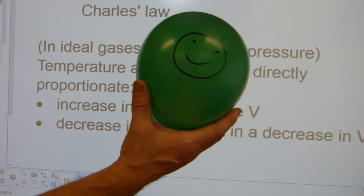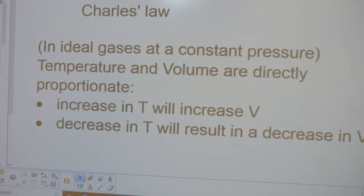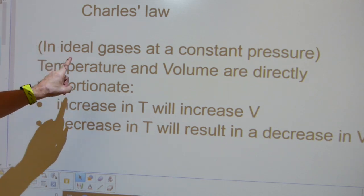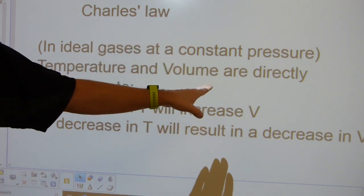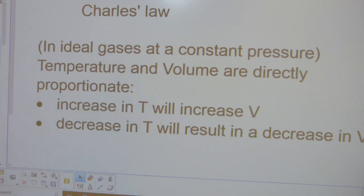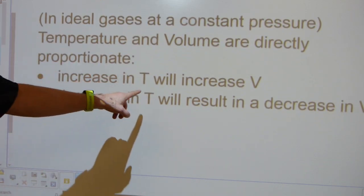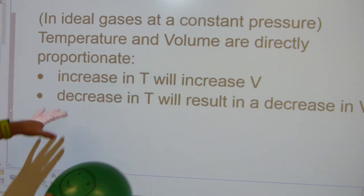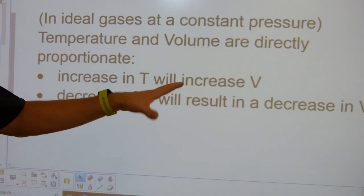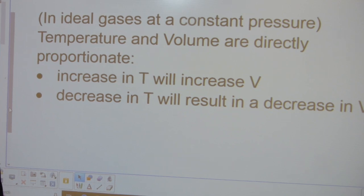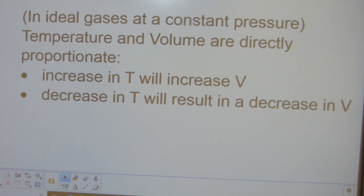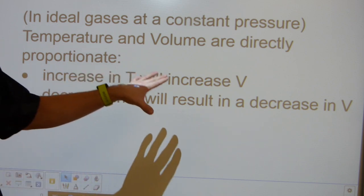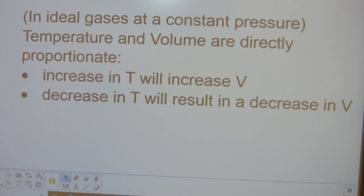So what Charles' law says in technical version is that temperature and volume are directly proportionate to each other. That's how this expanding balloon is captured in technical language. Notice, it starts with the word temperature, and then volume is mentioned second. An increase in temperature with the open flame will increase the volume, and a decrease in temperature will result in a decrease in volume. V stands for volume and T will stand for temperature.